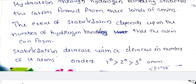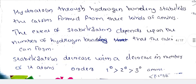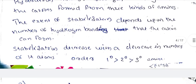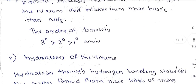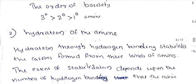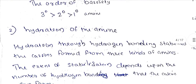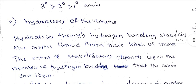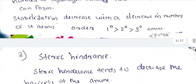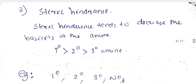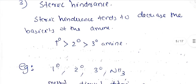In terms of hydrogen bonding, the order of stabilization is: primary greater than secondary, then tertiary. The third factor is steric hindrance.